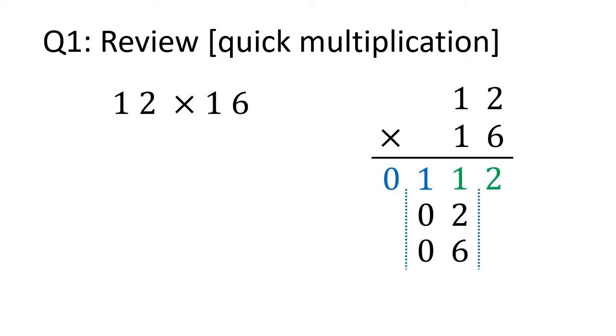Now we need to add them all. 2 just moves down. 1 plus 2 plus 6 is 9. 1 plus 0 plus 0 is 1, and 0 moves down. We can erase the zero in front of 192, so the answer is 192.